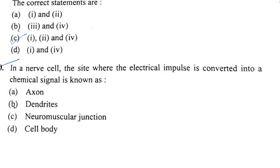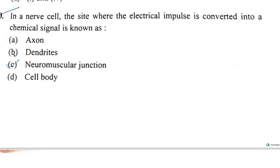Question 10: In nerve cells, the site where the electrical impulse is converted into a chemical signal is at the synapse (junction). This is a simple question about the nerve junction.